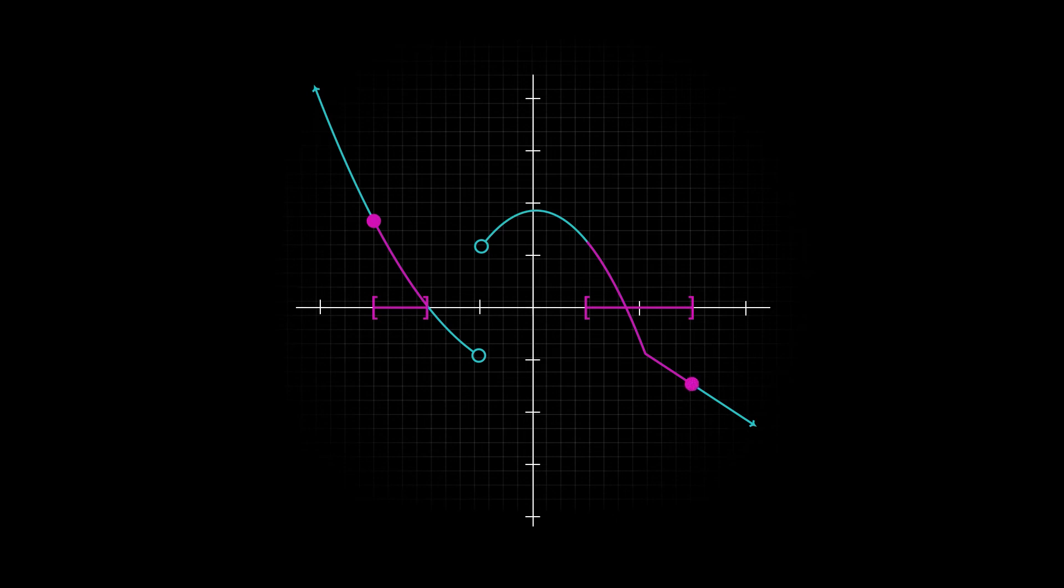So we can see the extreme value theorem hinges entirely on the fact that the function must be continuous and the set must be compact. But using this fact is enough to determine that a function must have both an absolute maximum and an absolute minimum, information that might be otherwise very difficult to determine.